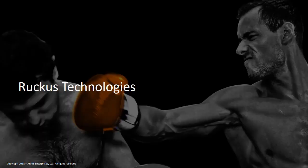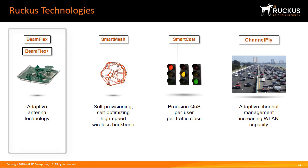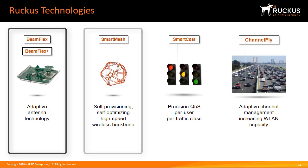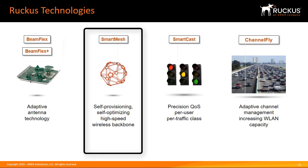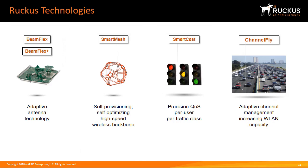Ruckus Wireless has a number of proprietary technologies that ensure wireless LANs provide optimal performance under the most testing conditions. These are BeamFlex and BeamFlex Plus, SmartMesh, SmartCast, and ChannelFly.